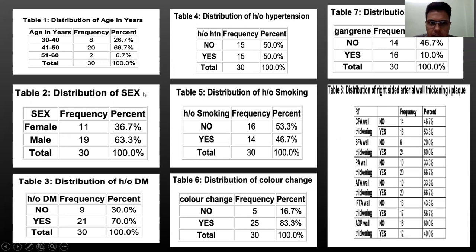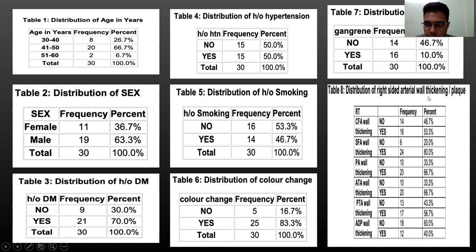The results show the distribution of age in years according to various parameters described here — including distribution of age, history of hypertension, gangrene, history of smoking, right-sided arterial wall thickening, plaque, color change, and diabetes mellitus. The various results have been displayed accordingly, which you can see on your screen.